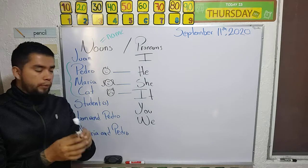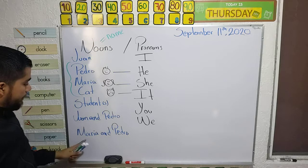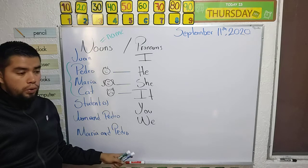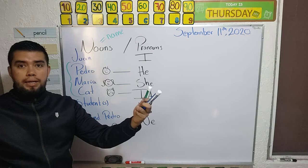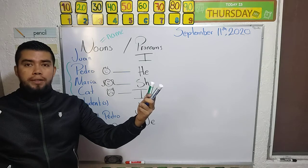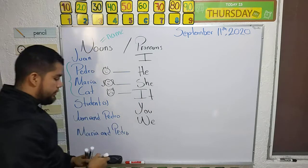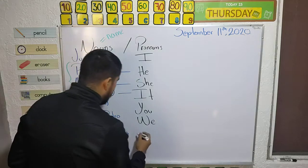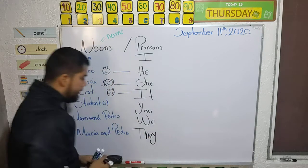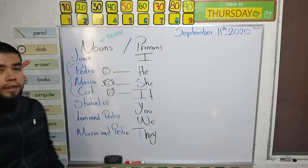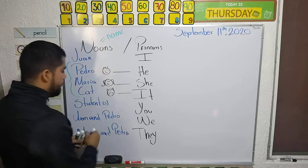Then Maria and Pedro — and I am not part of the group. So in that case, we use 'they'. Maria and Pedro, and I am not included — so it's 'they'.